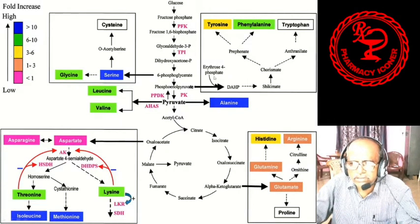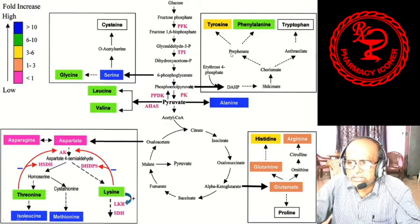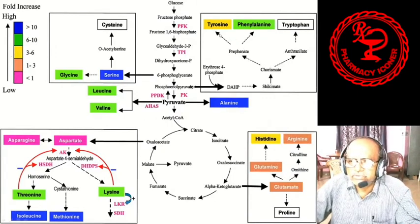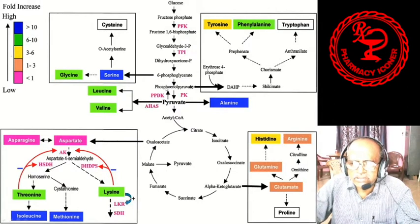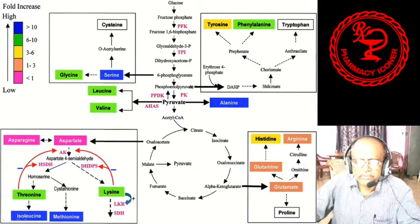Phosphoenolpyruvate together with erythrose-4-phosphate ultimately forms shikimic acid or shikimate. From shikimate, chorismate is formed. From chorismate, two intermediates are produced: prephenate (prephenic acid) and anthranilate (anthranilic acid). From prephenate, two amino acids are formed — tyrosine and phenylalanine — and from anthranilate, tryptophan is formed. So via the shikimic acid pathway, three aromatic amino acids are formed.